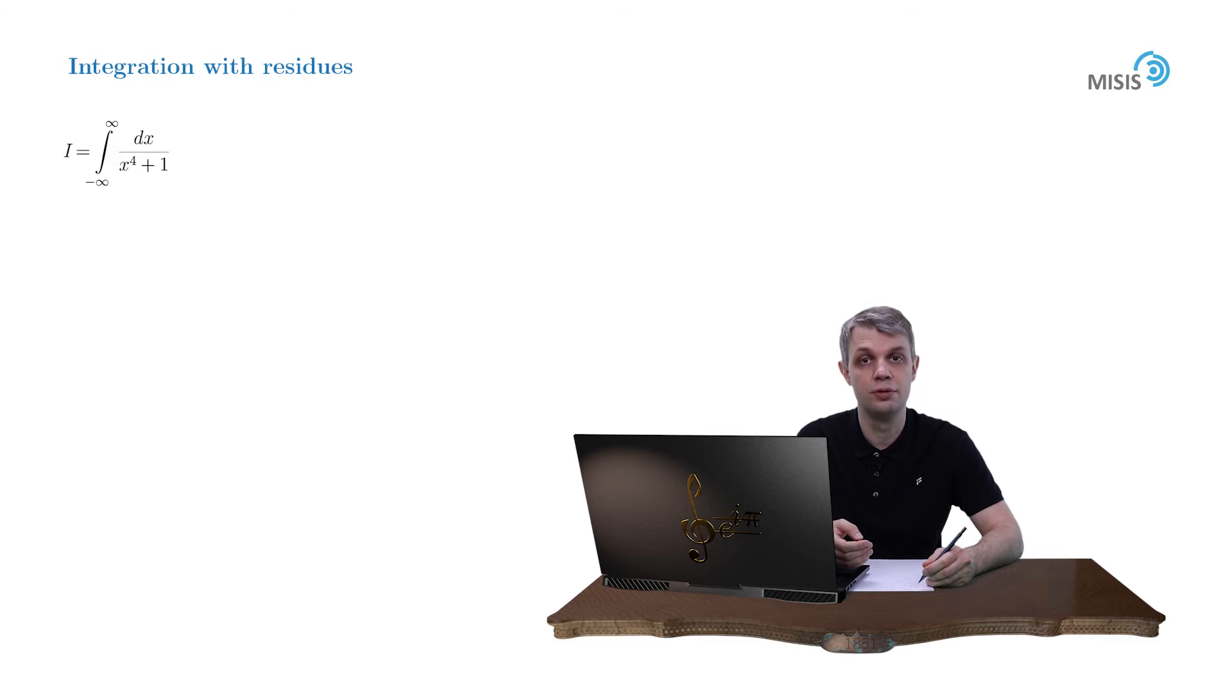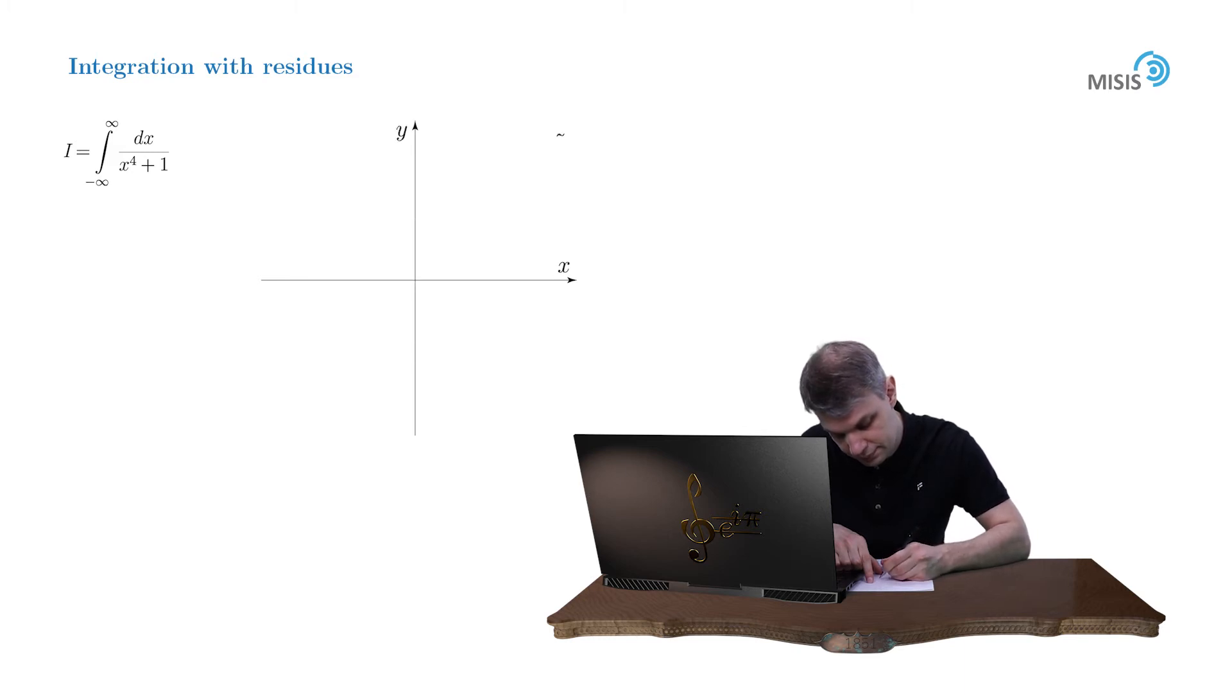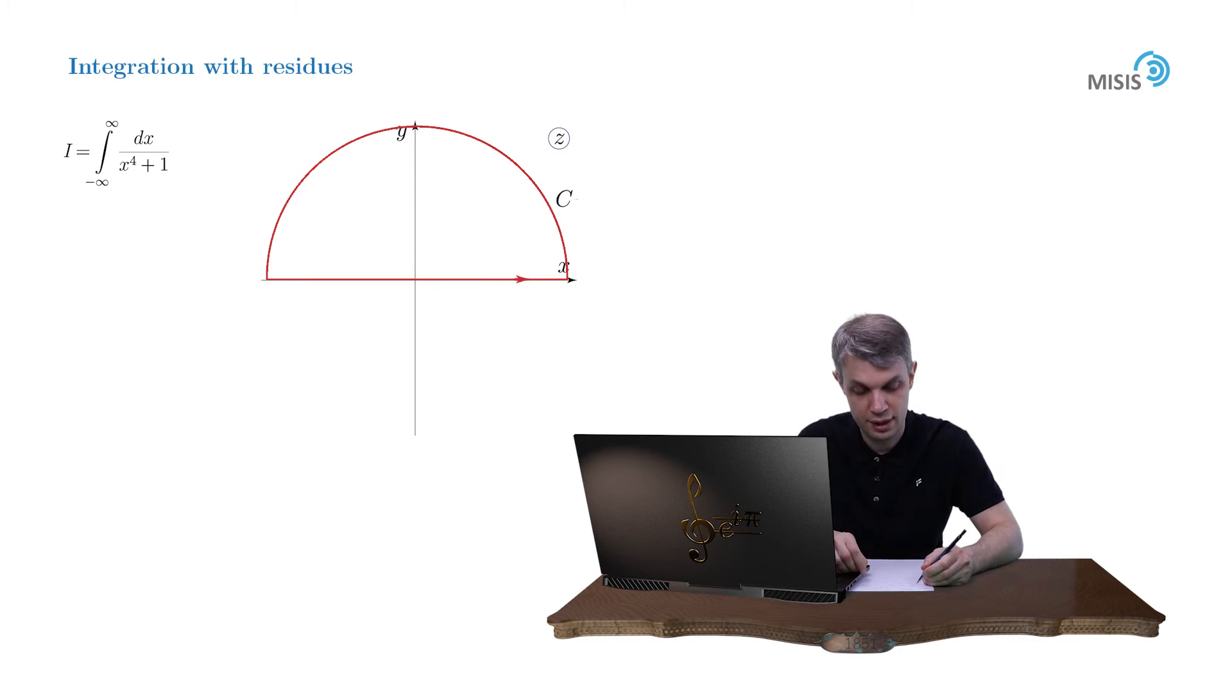In complex analysis things work only for closed contour integrals, so we need to devise some closure of this contour. Whenever we deal with infinite domain of integration, the most often used closure is the upper or lower semi-arc. In this case let's opt for the upper semi-circle.